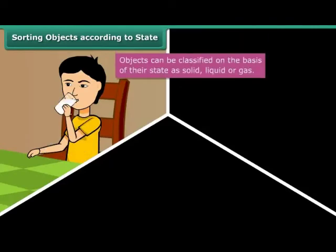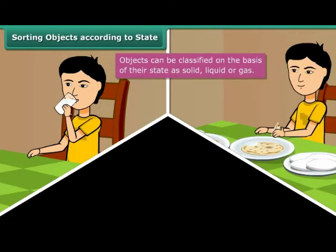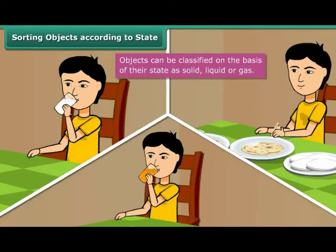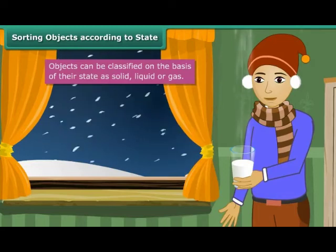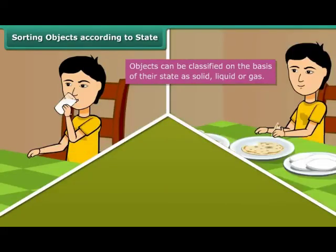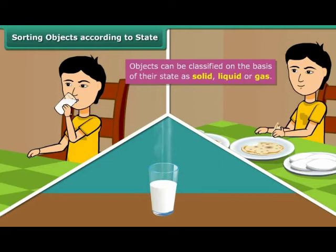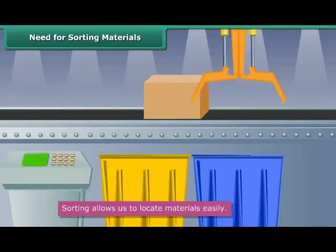The water you drink to quench your thirst is liquid, whereas the food you eat is solid. The chilled juice you relish in summers is liquid, whereas the glass container you have it from is solid. The steaming hot milk you enjoy in winters is liquid, whereas the steam coming out of the milk is a gas. Thus, all objects we see around us or use in daily life can be classified into one of three categories: solid, liquid, and gas.